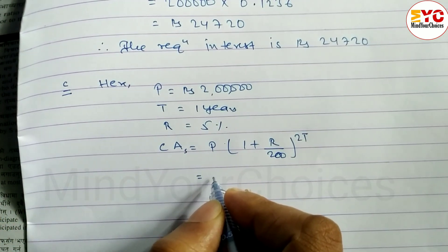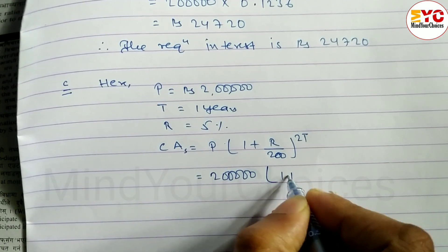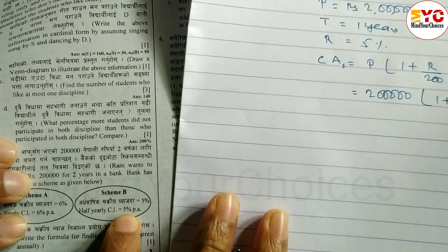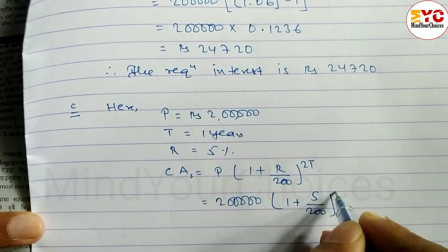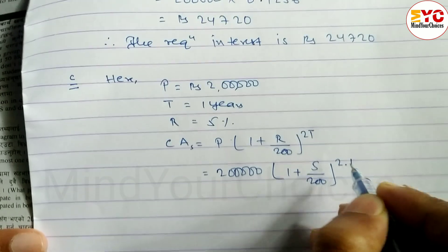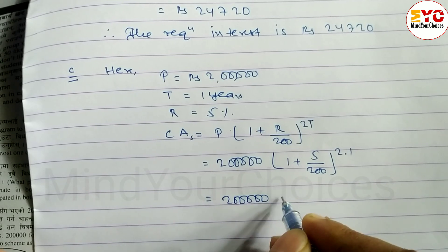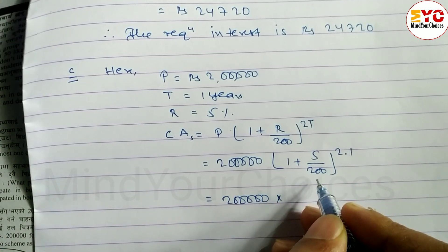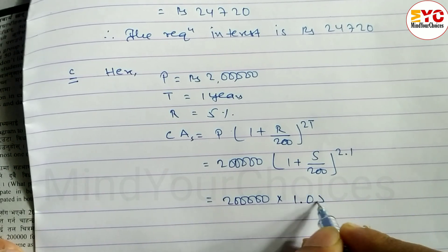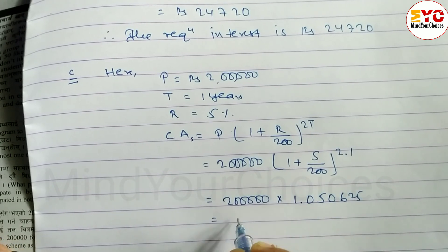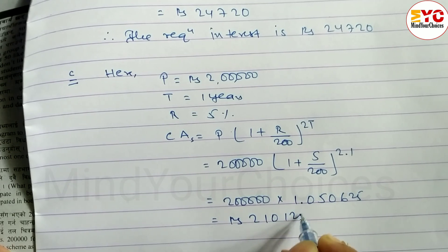For Part C, P = Rs. 2 lakhs, Time = 1 year, Rate = 5%. Using the semi-annual formula: Amount = P × (1 + R/200)^(2T). Amount = 2 lakhs × (1 + 5/200)^2 = 2 lakhs × (1.05/...)^2 = Rs. 2,10,125.